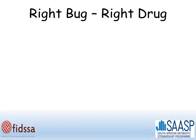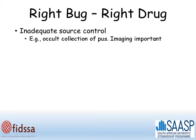If you've got the right bug and the right drug, that means the culture sensitivity results are back and you appear to be treating with the right drug but your patient's not getting better. Here there are five possibilities you need to think about. You may have inadequate source control, and this is probably the commonest. This might mean that there is an occult collection of pus that the antibiotics are not penetrating to, and that's why the patient isn't improving. Often imaging is important to find that collection.